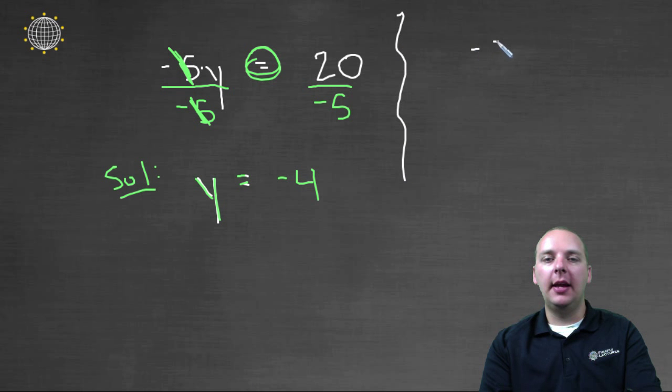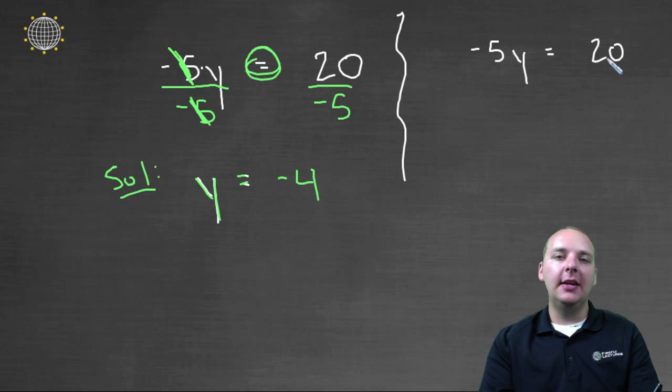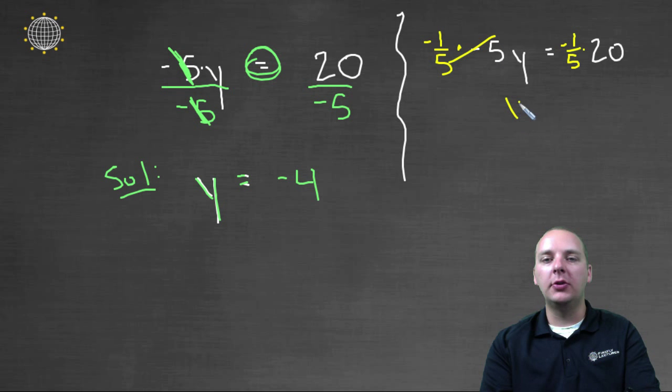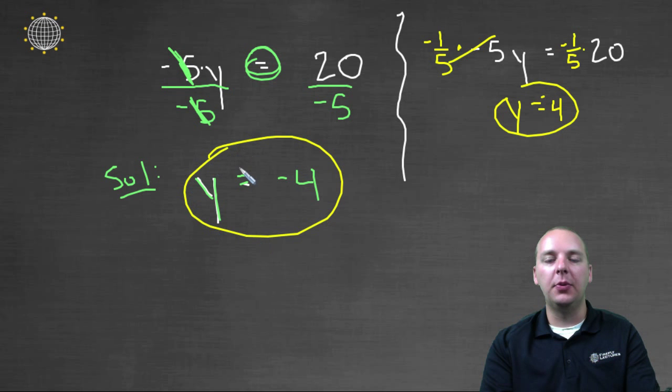Let's say we had negative five y equals twenty. Instead of saying divide by negative five, you could say multiply by negative one-fifth. That would basically be the same thing. And so when these cancel, you would also get y equals negative four, the exact same answer that we got back here.